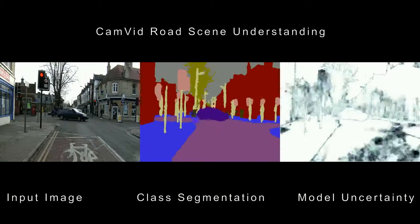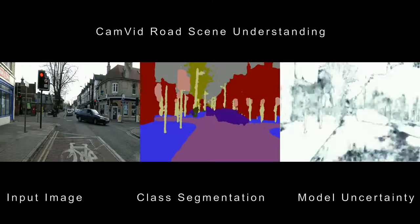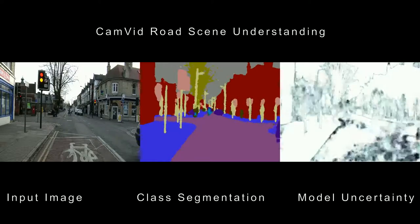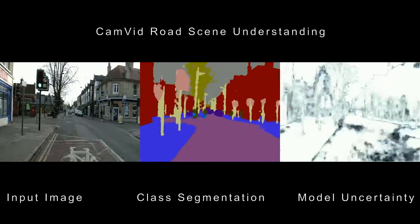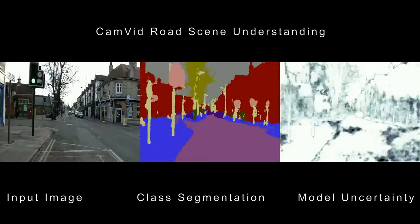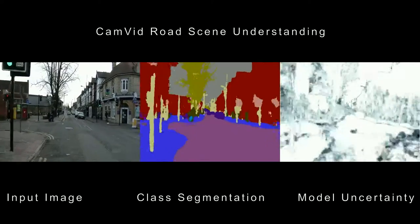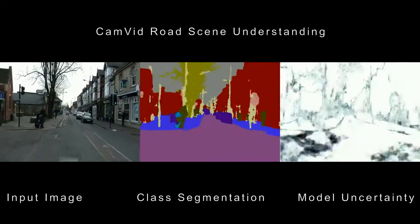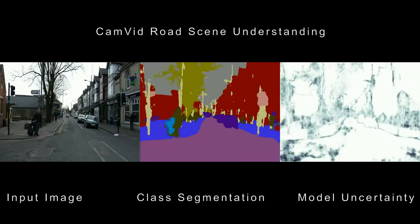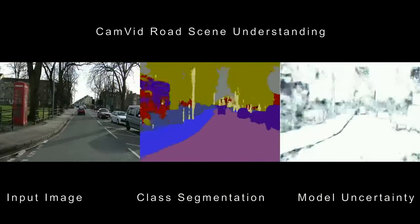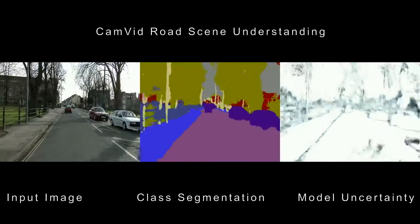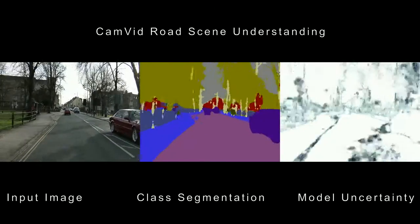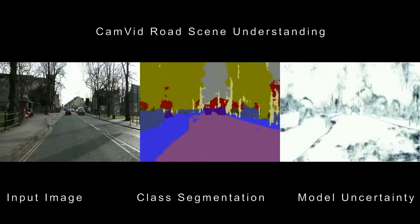Here we show its results on CAMVID, a dataset for road scene understanding. On the left is the input image. In the centre is the segmentation output showing the predicted pixel semantic labels. On the right is the estimate of overall model uncertainty.